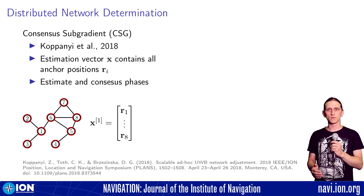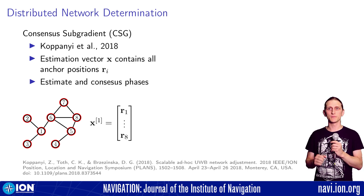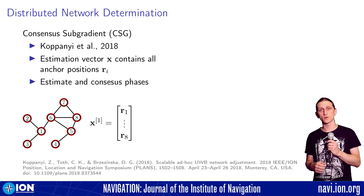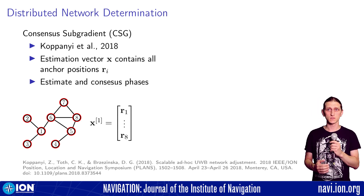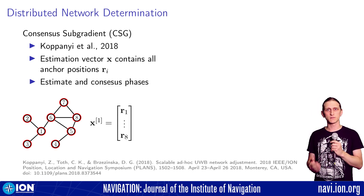This can be done with the consensus subgradient algorithm, where each anchor measures distances to its neighbors, updates the position estimates and shares them until the network reaches consensus. This is repeated until the estimation vector converges.